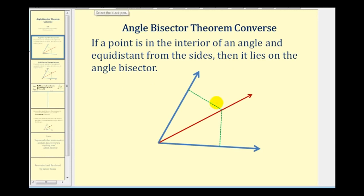If we consider a point on the interior of this larger blue angle, and it is equidistant to the blue rays that form the angle — meaning this green segment is congruent to this green segment — then this black point must lie on the angle bisector, as shown here in red.